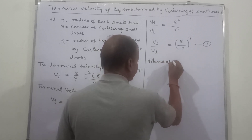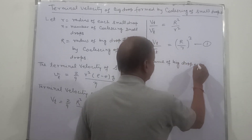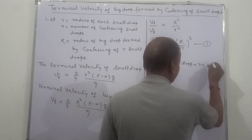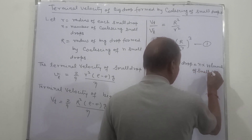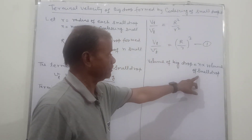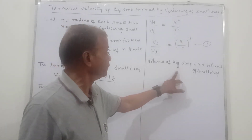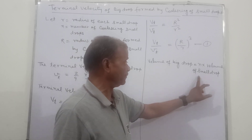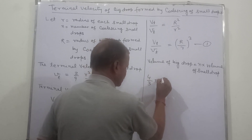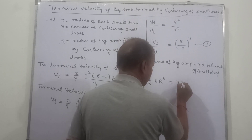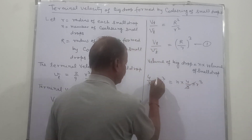Volume of the big drop is equal to N times the volume of the small drop, because N drops have coalesced to form the big drop. So (4/3)πR³ is equal to N times (4/3)πr³. The (4/3)π will cancel.